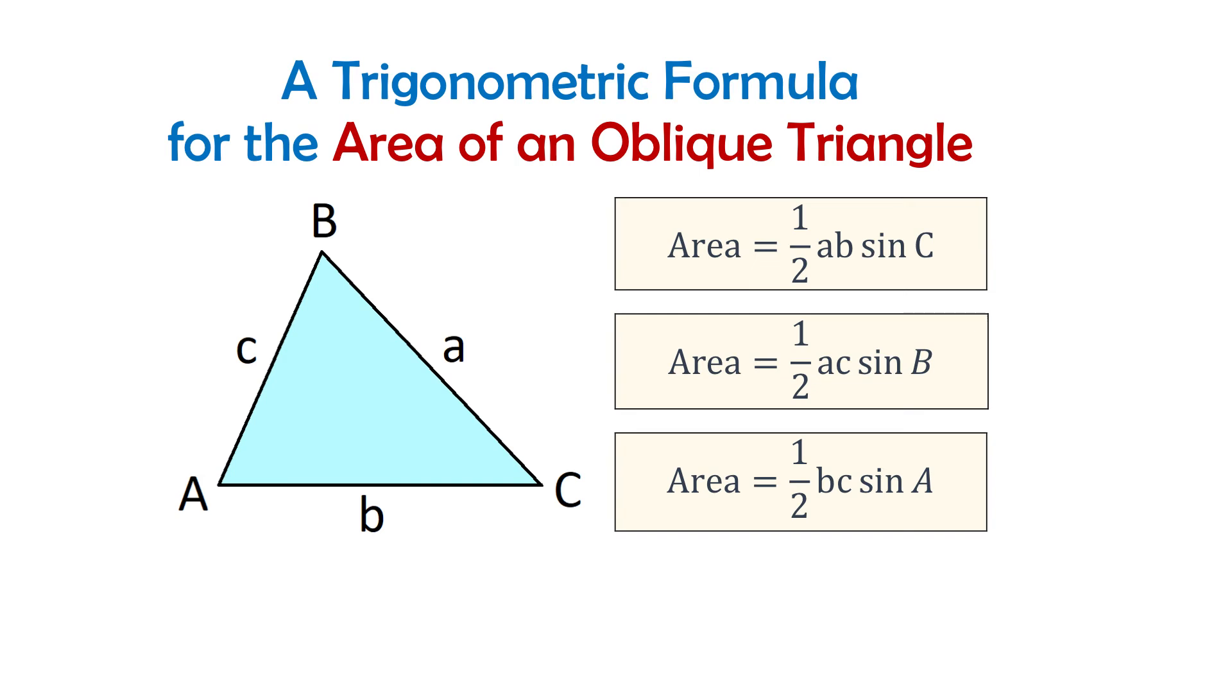In general, if we have a triangle with sides a, b, and c and angles A, B, and C, then to find the area we can use any of these three formulas.